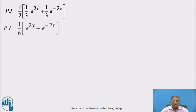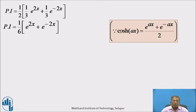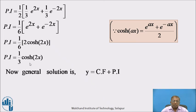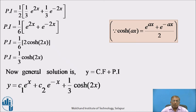Taking 1/3 as common: PI = 1/6 · (e^(2x) + e^(−2x)). Since cosh(ax) = (e^(ax) + e^(−ax))/2, we have e^(2x) + e^(−2x) = 2·cosh(2x). Therefore, PI = 1/6 · 2·cosh(2x) = 1/3·cosh(2x). The general solution is y = CF + PI: y = C₁·e^x + C₂·e^(−x) + 1/3·cosh(2x).